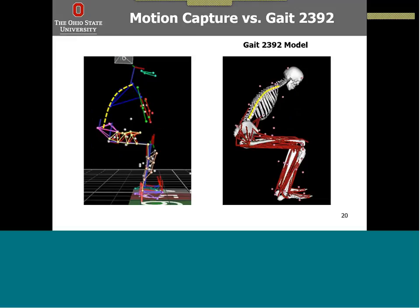We can use GAIT2392 very successfully for walking, running, and other tasks where the torso is mostly upright. There are a lot of models shared by researchers available in OpenSIM, but when doing this work last year, we couldn't find one suitable for sit-to-stand. So we couldn't just quit — that means we have to make our own model.